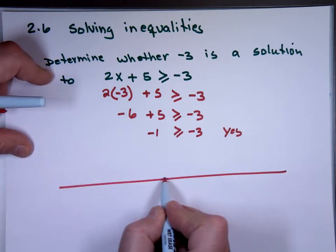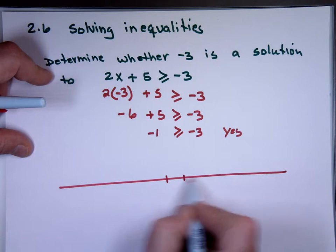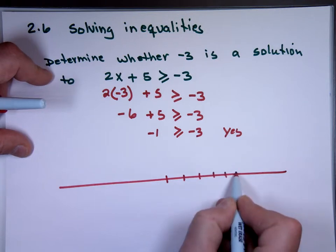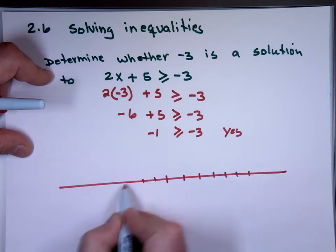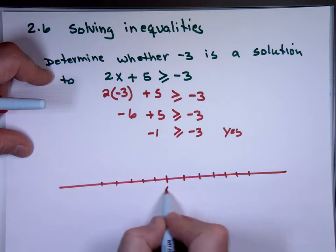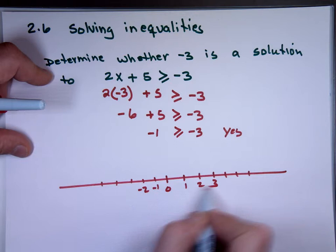Why is it bigger? The number on the right is always bigger than the number on the left. Remember that? 0, 1, negative 1, negative 2, 2, 3, negative 3, 4, negative 4, 5, negative 5.